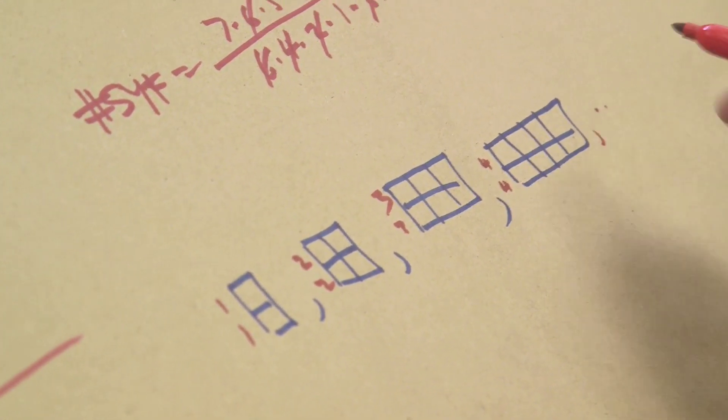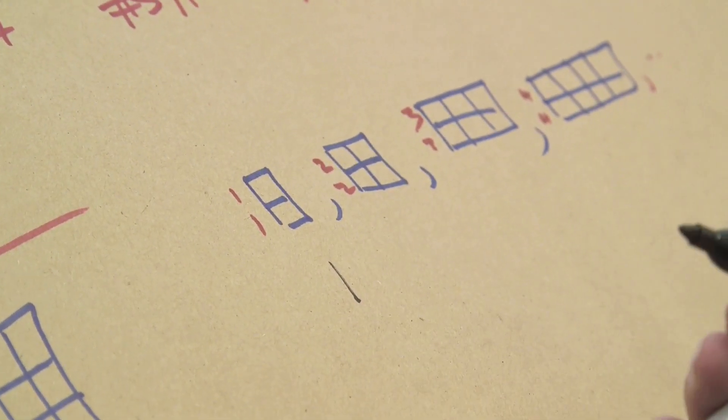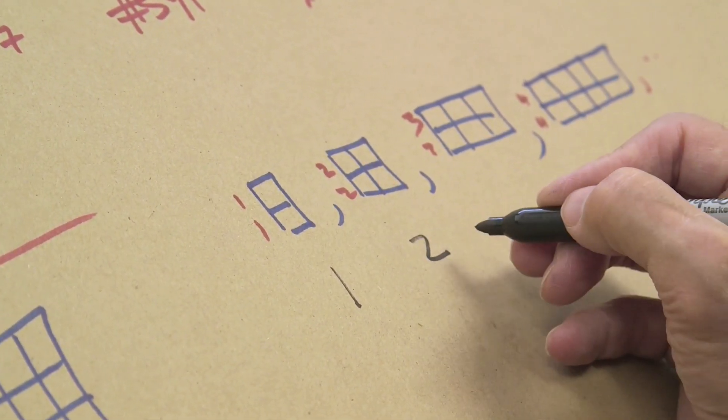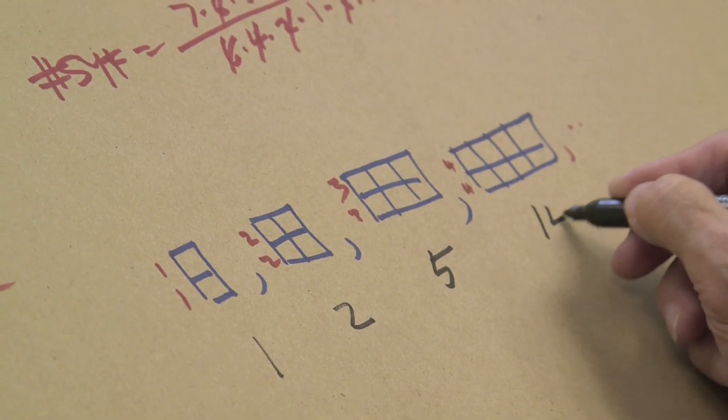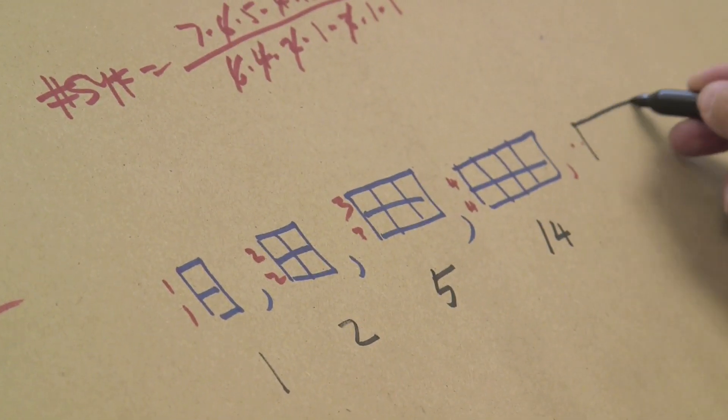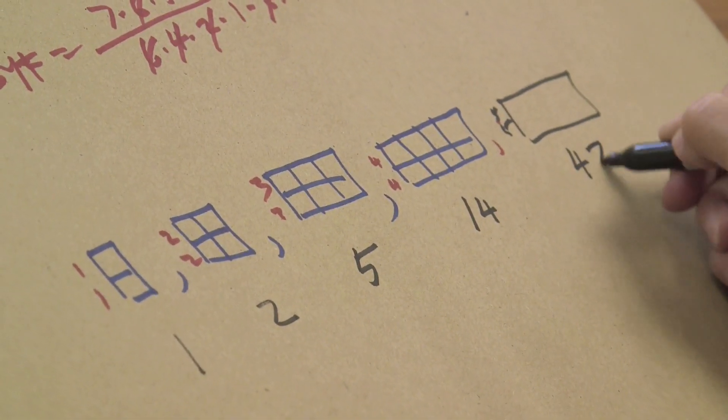And how many standard Young tableaux are there? Well, obviously there's one here because there's only one way to satisfy the rules. There's two here, we've seen that before. Here there are five, and here there are 14, and if I were to do the next one, five-five, it would be 42.